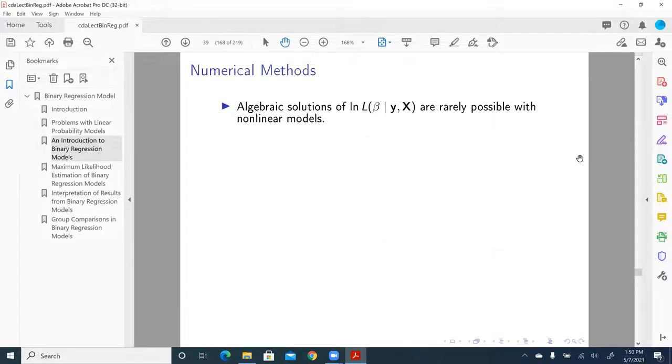In maximum likelihood estimation, in general, unlike OLS regression, we can use matrix algebra to solve for the result. Algebraic solutions of log likelihood with regard to beta are rarely possible with nonlinear models. So numerical methods are usually required.